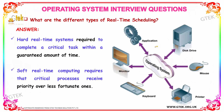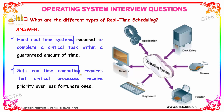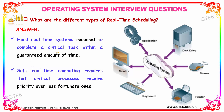What are the different types of real-time scheduling? Hard real-time scheduling and soft real-time scheduling are the two types. Hard real-time scheduling means completing a critical task within a guaranteed amount of time. Soft real-time computing means a critical process receives priority over less critical ones.